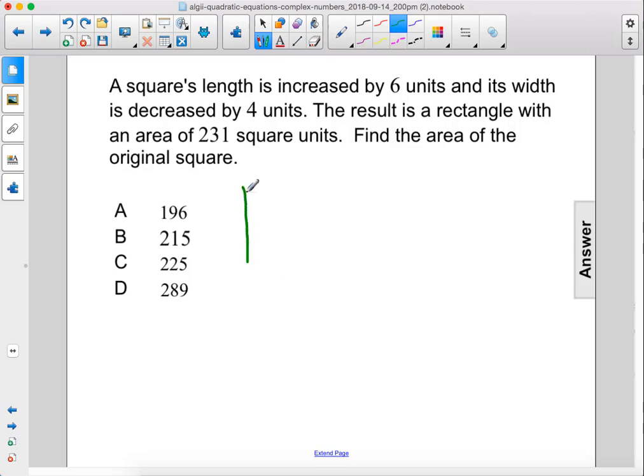Let's draw the original square. It looks like this and it has x and x because the sides are equal in length.